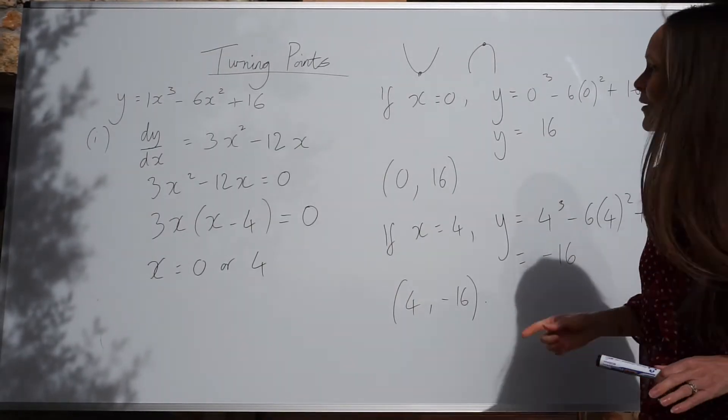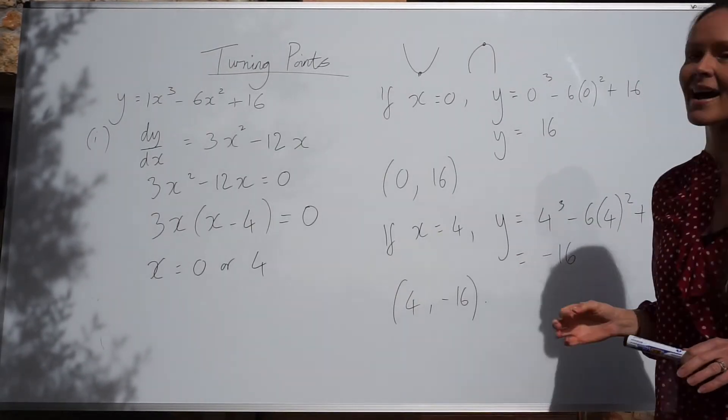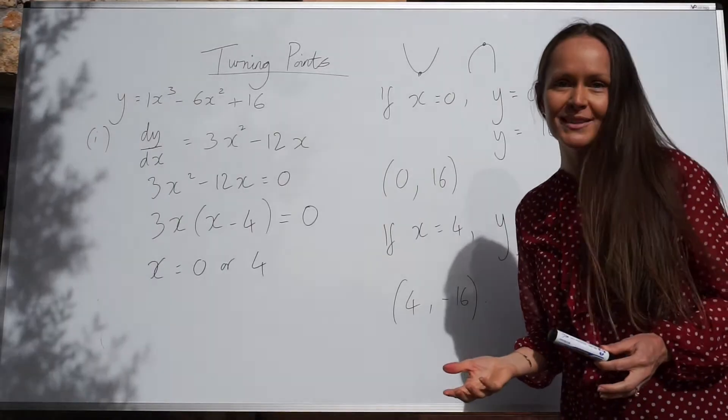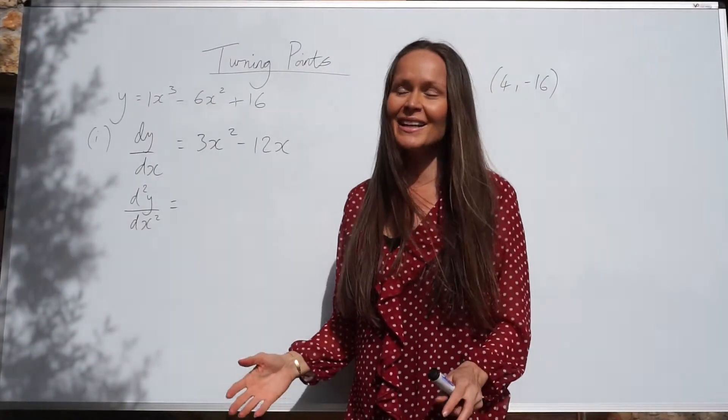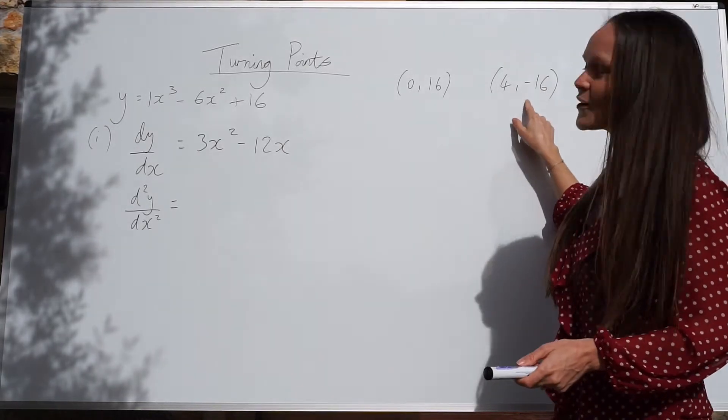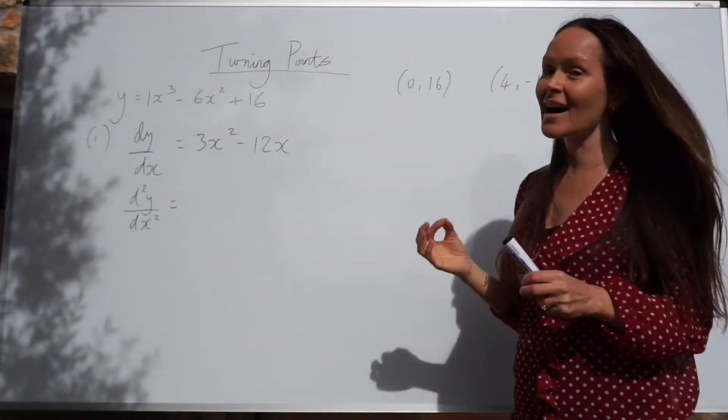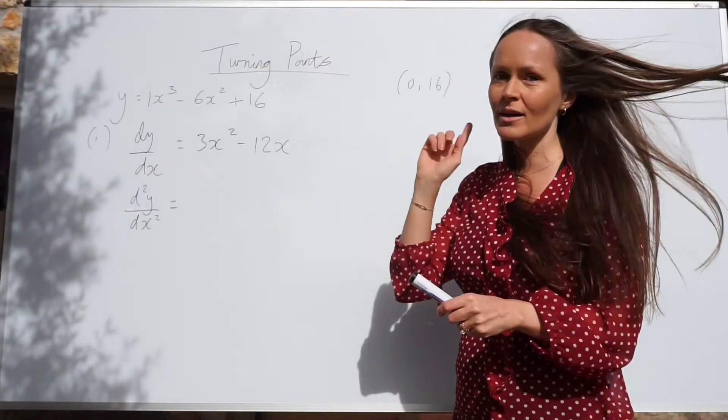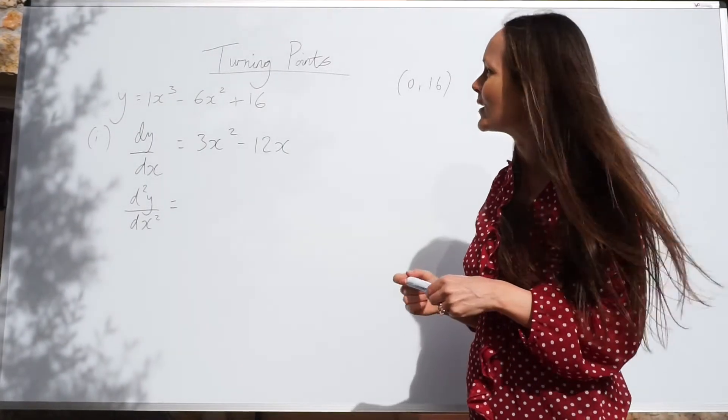So next we need to work out, are these lying at a maximum or a minimum point? So we're nearly finished. In the last part, remember we worked out the coordinates of our two turning points here. And now we need to work out whether each of those are a minimum or a maximum turning point.